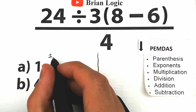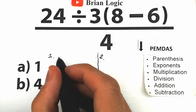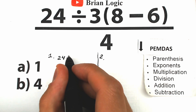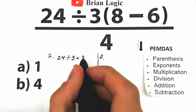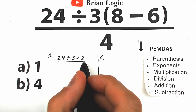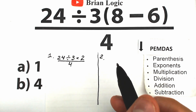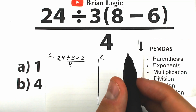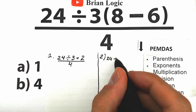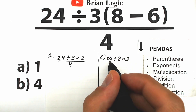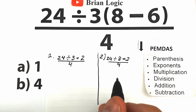Here are our two interpretations. In both cases, the first step is parentheses — we evaluate the expression inside: 8 minus 6 equals 2. So both interpretations start the same: we have 24 divided by 3, times 2, divided by 4. What makes all the difference is the order in which we handle the remaining operations.